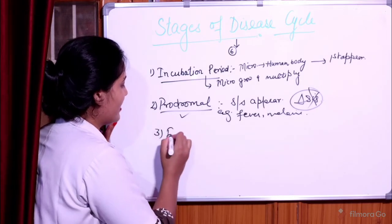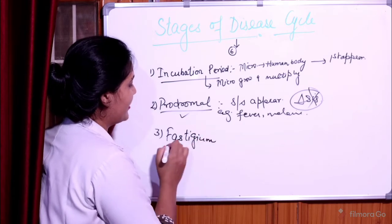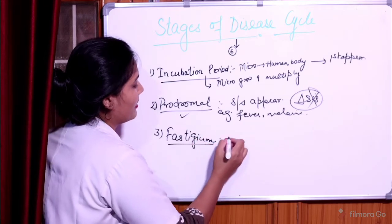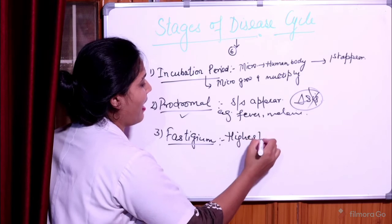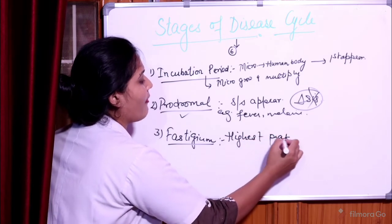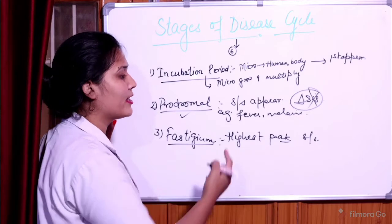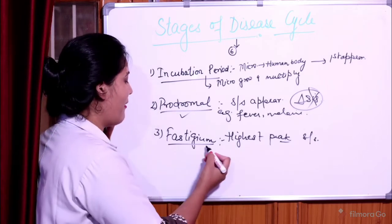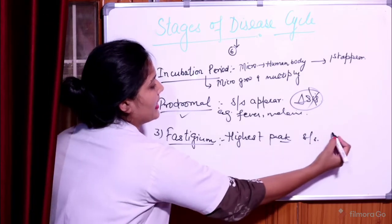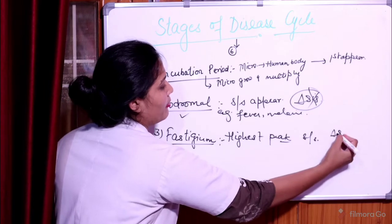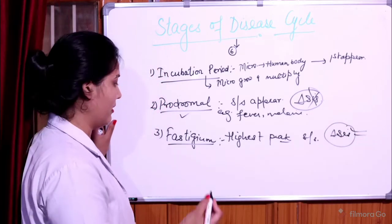The third stage is the stage of fastigum. This is the stage that is at the highest peak — when the signs and symptoms are at their highest peak. In this stage, we can able to make a diagnosis regarding the disease condition.